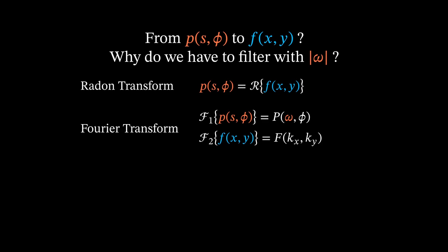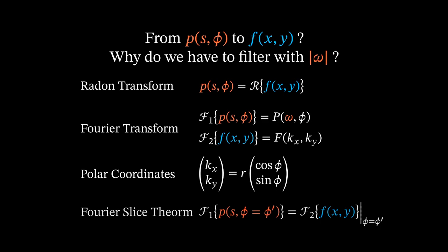Secondly, we need the one-dimensional definition of the Fourier transform of the projection function small p, as well as the two-dimensional definition of the Fourier transform of the object function small f. Note that Fourier transform functions have the capital letters P and F. Thirdly, polar coordinates will be used. And lastly, the Fourier slice theorem, which will be proved in the end of this video.